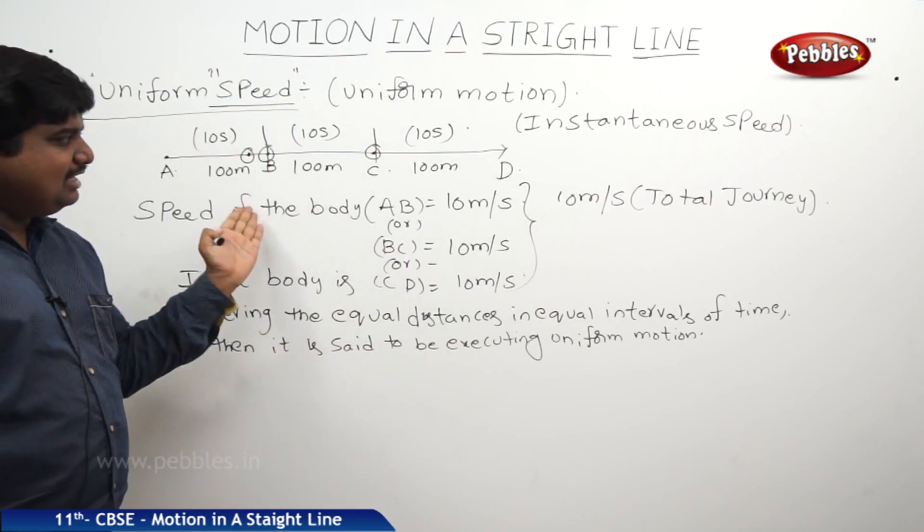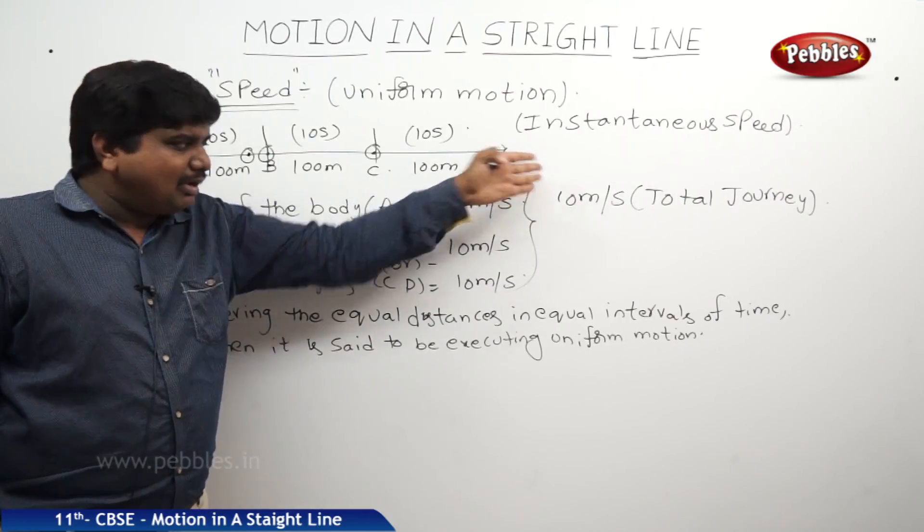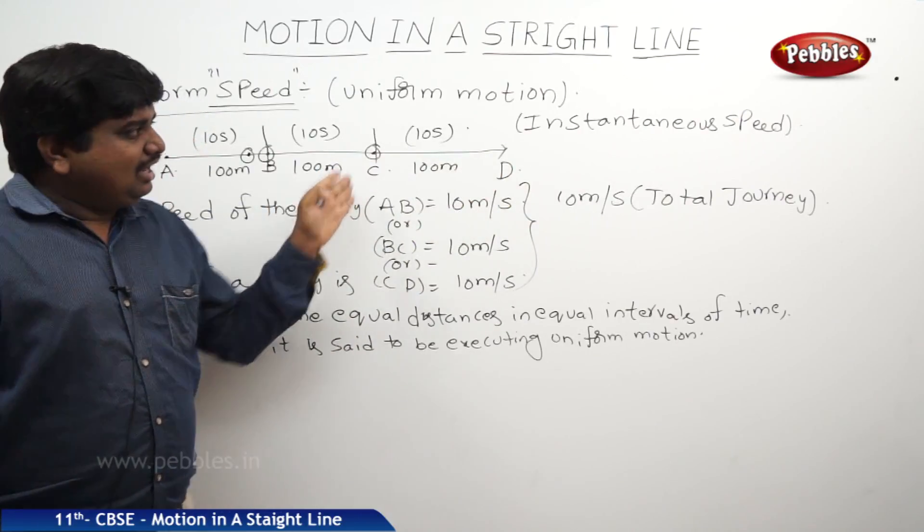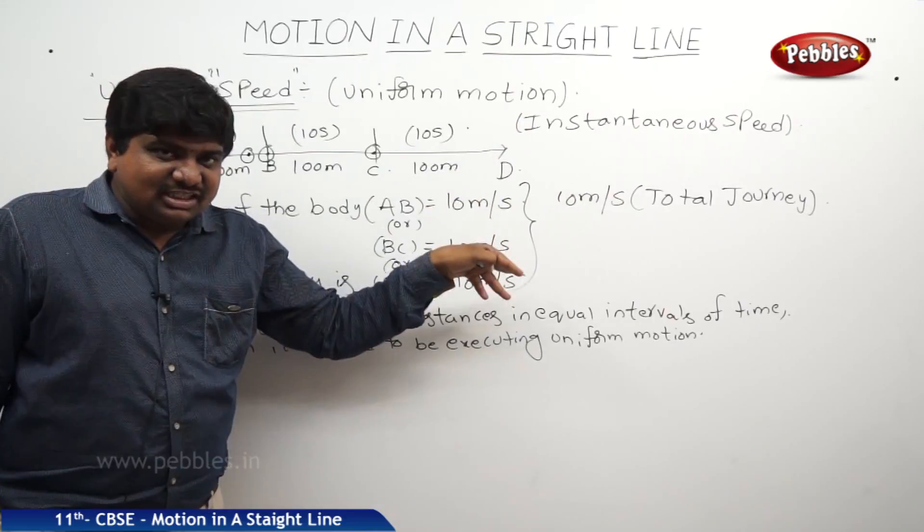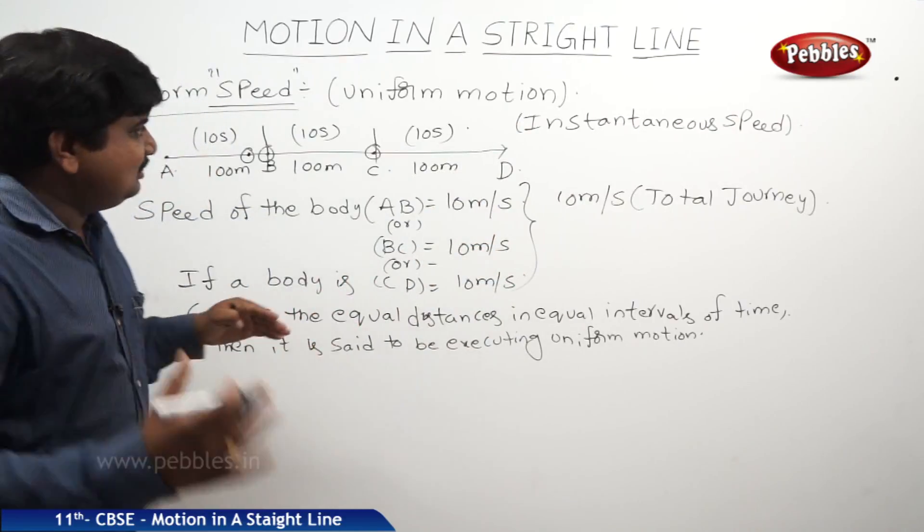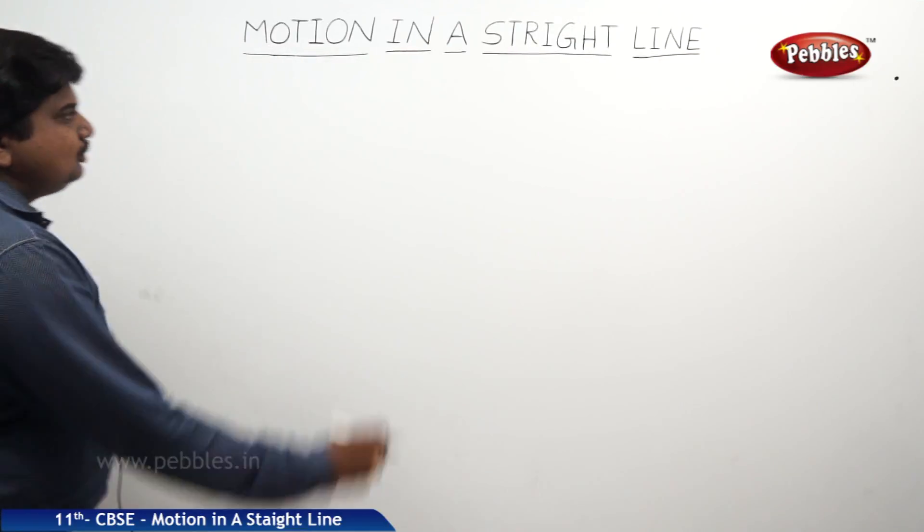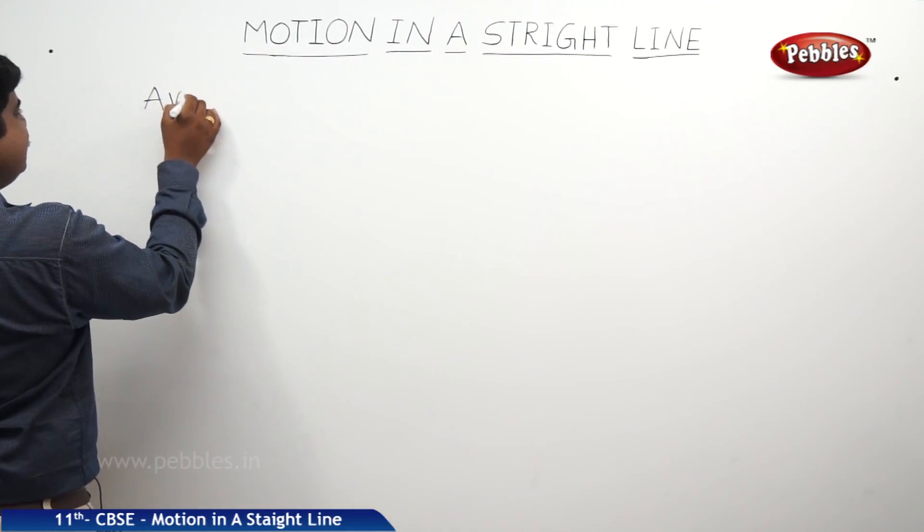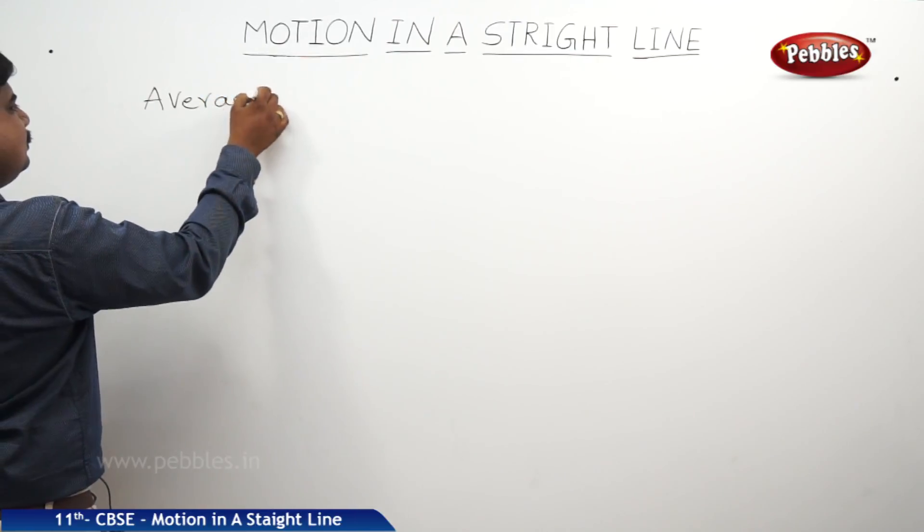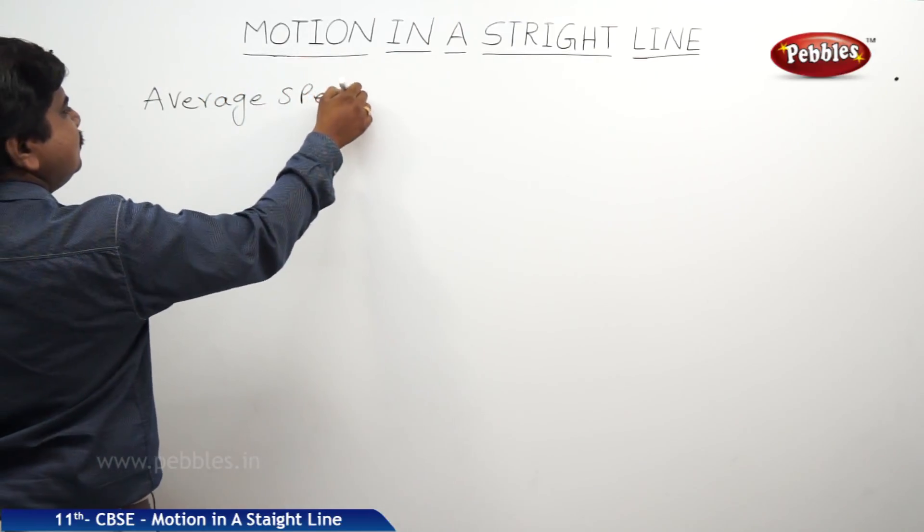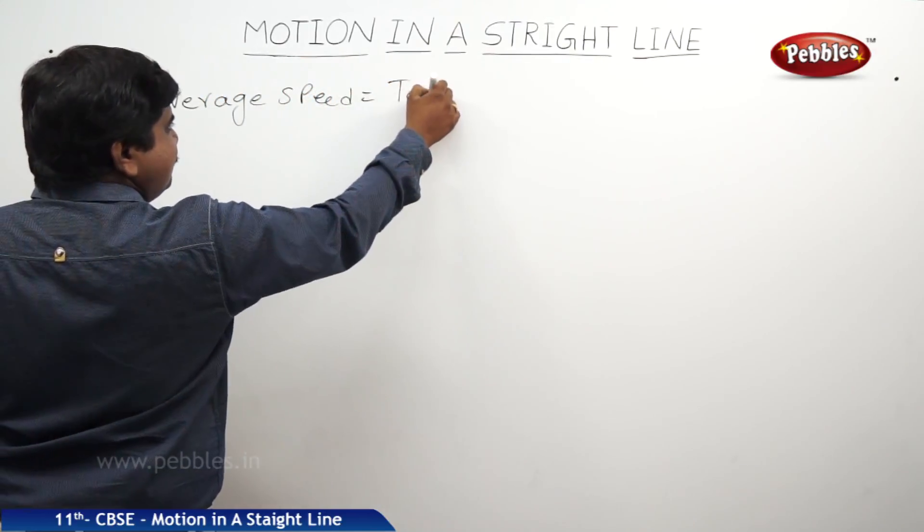What about the average speed? Average speed means total distance by total time. If the instantaneous speed and average speed is same for a body, then we can say the body is executing uniform motion.